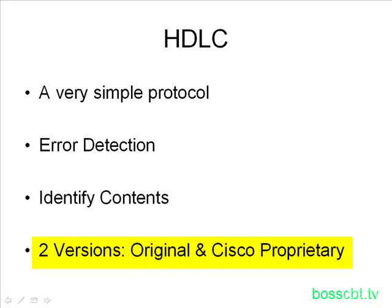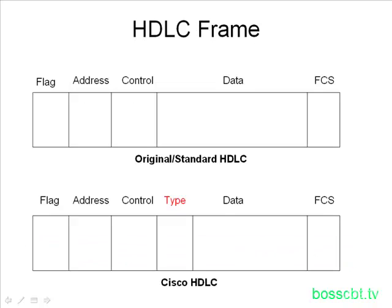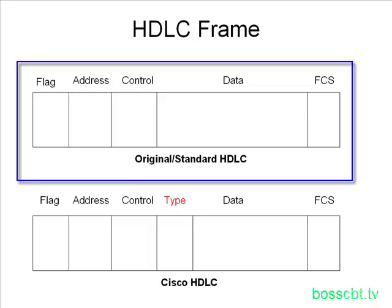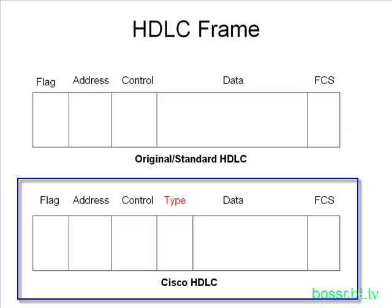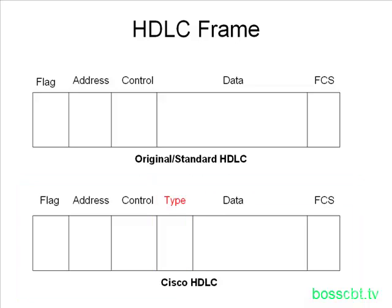Looking at the frame helps understand the difference between the original and the Cisco version. The standard HDLC has a header with a few fields, the data, and a frame check sequence in the trailer. The Cisco implementation differs by one field — Cisco added a type field used to identify the protocol in the data. Standard HDLC couldn't do that, so you were limited to one network layer protocol on a serial link. Cisco HDLC made it possible to use multiple networking layer protocols, identifying which protocol was in each data packet.